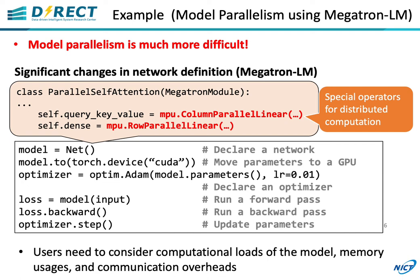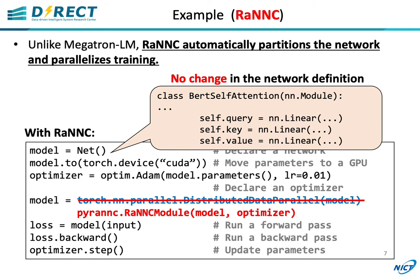Unlike Megatron LM, RANK automatically partitions the network and parallelizes training, so you don't need to change the definition of the network. You just need to insert one line, similarly to data parallelism.